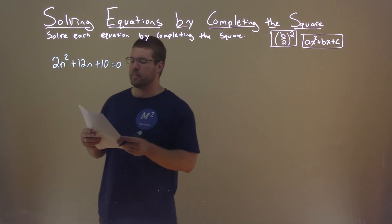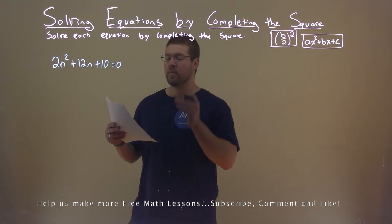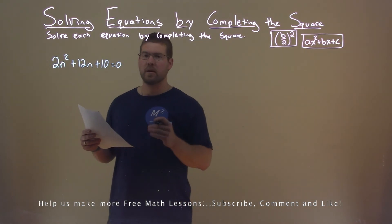We're given this problem right here: 2n squared plus 12n plus 10 equals 0. We want to solve this by completing the square.